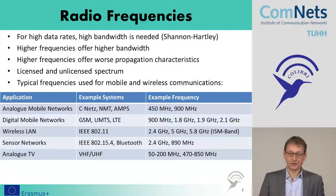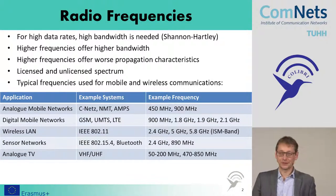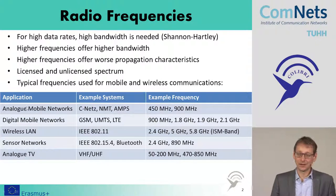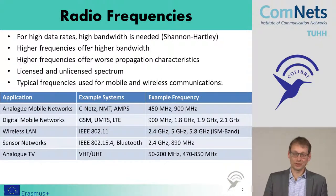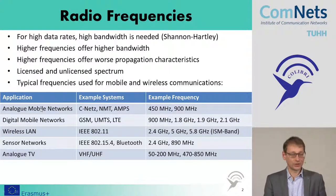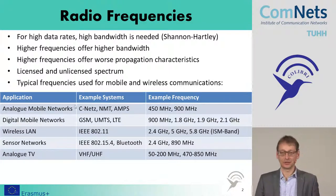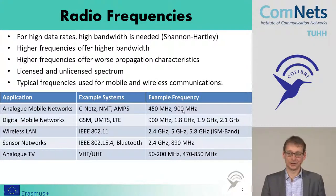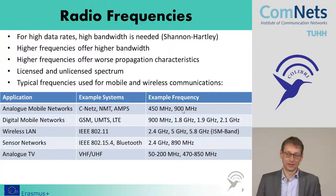Looking at the typical frequencies used for mobile and wireless communications, there's a small summary in the table here. The older analog mobile phone systems used low data rates, low bandwidth, and rather low frequencies — 450 MHz typically for CNET, but also up to 900 MHz for the Scandinavian system.